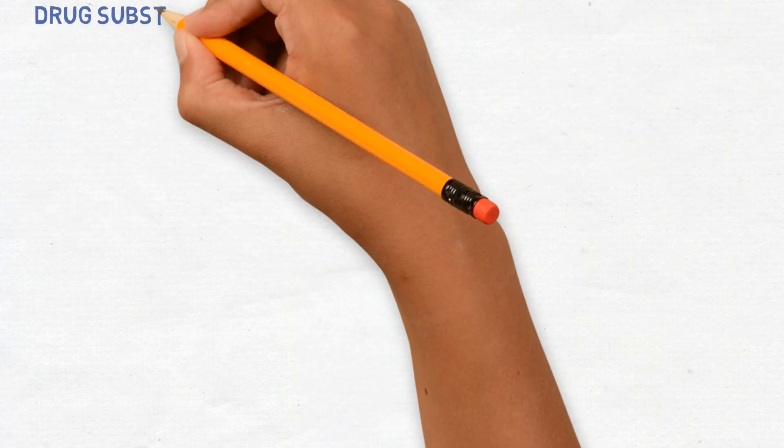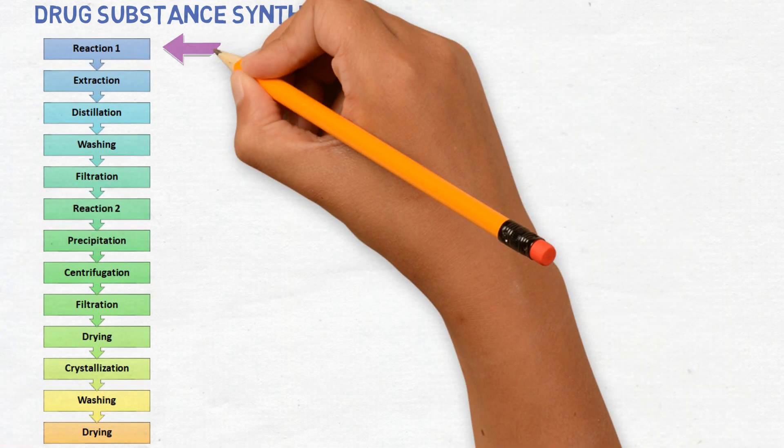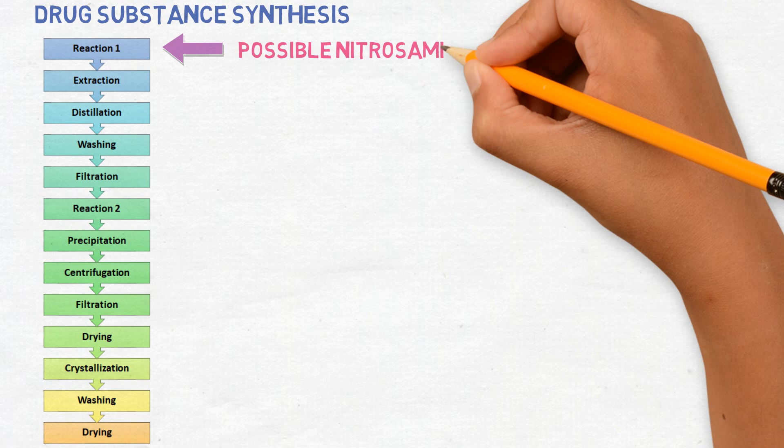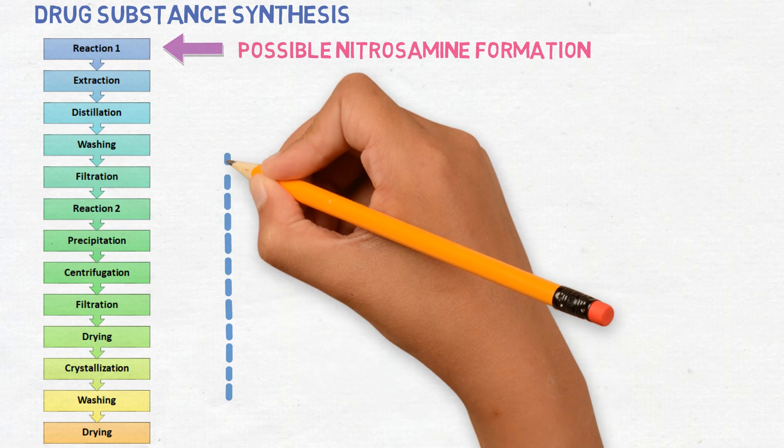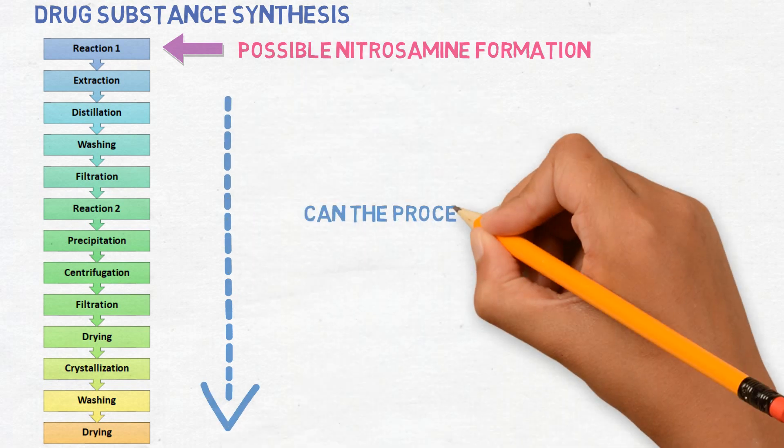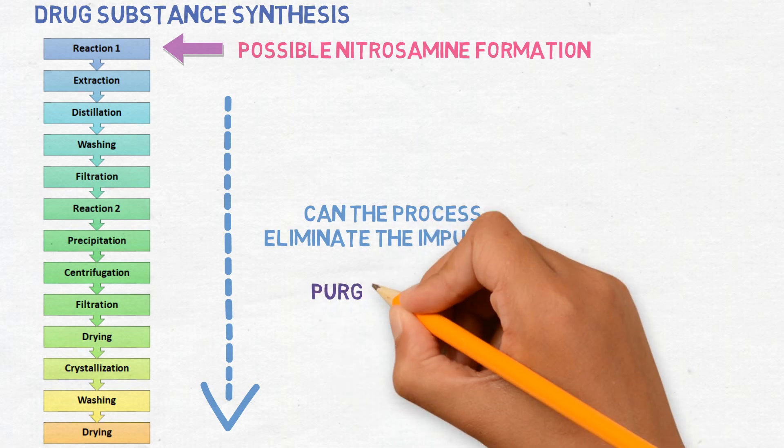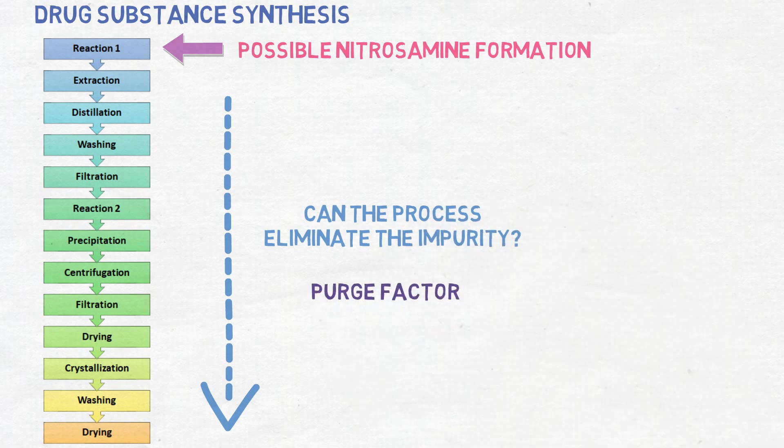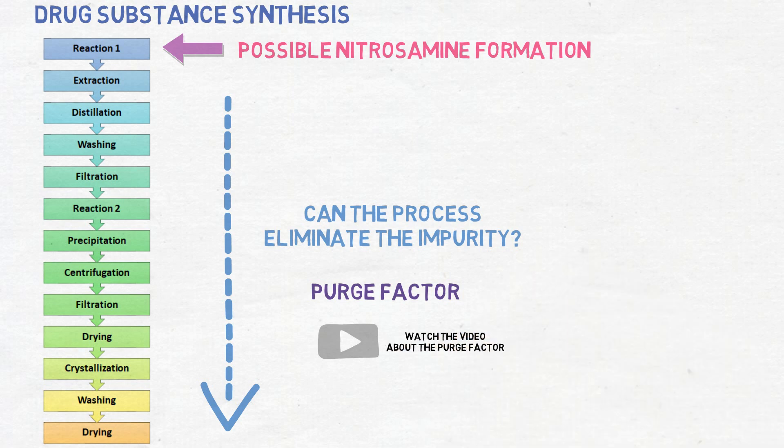What can happen, for example, is that a nitrosamine may theoretically be formed in an initial stage of the drug substance synthesis. In this case, it is possible to estimate whether the manufacturing process is capable to eliminate the impurity before it even reaches the drug substance. This can be calculated with a purge factor. To know more, watch the video about the purge factor. The link will be in the description below.